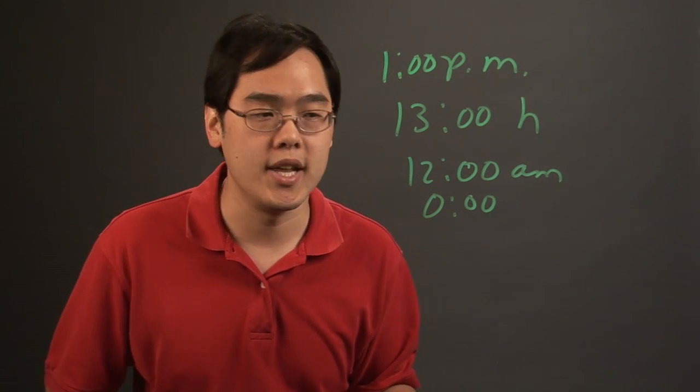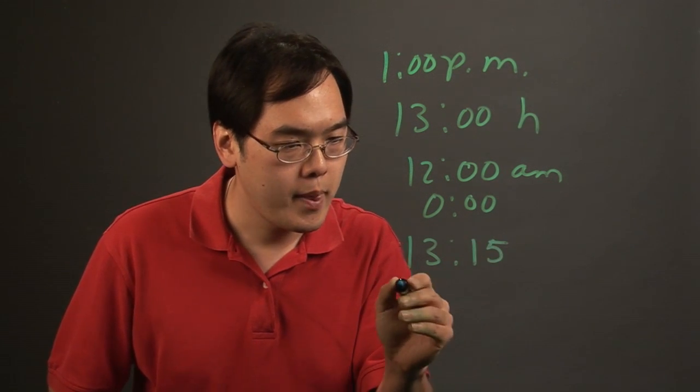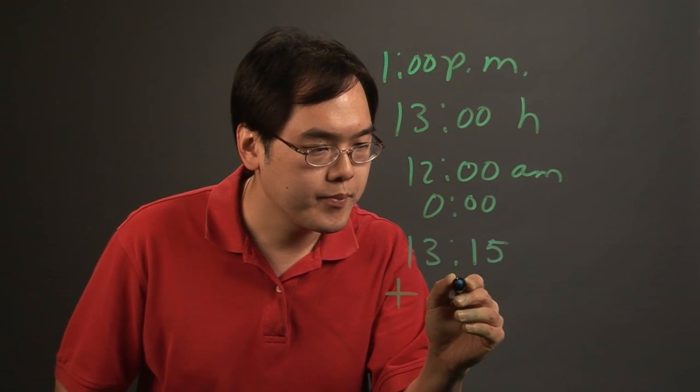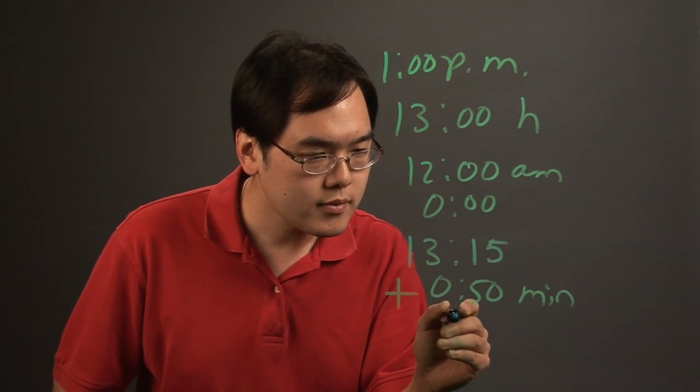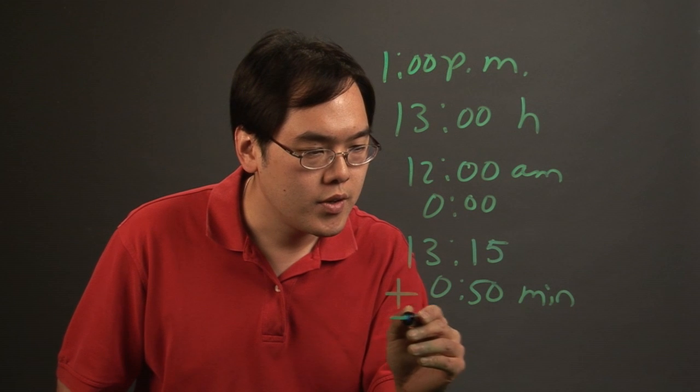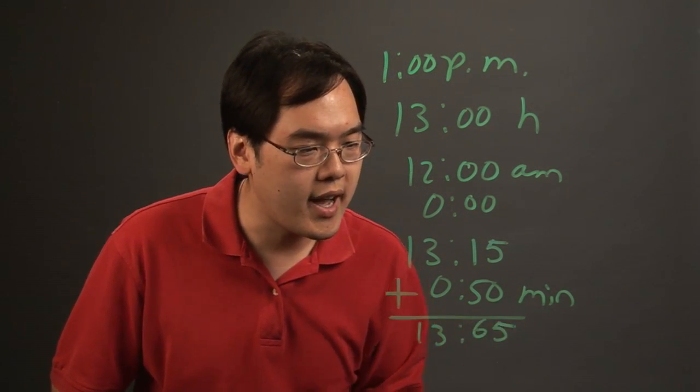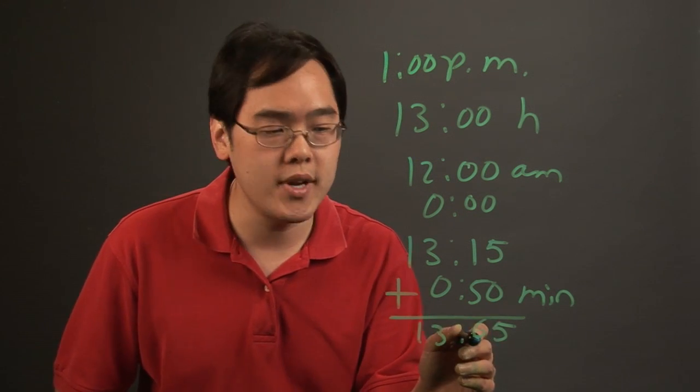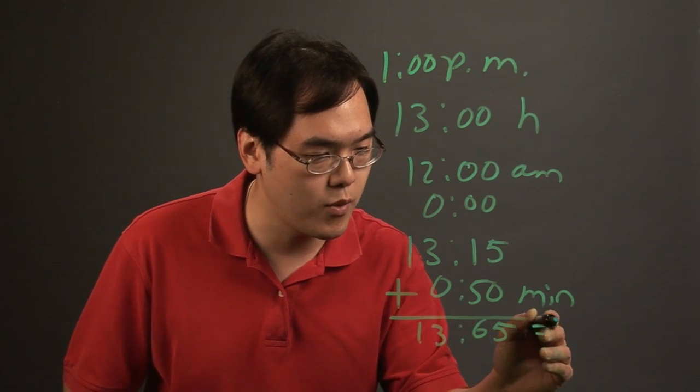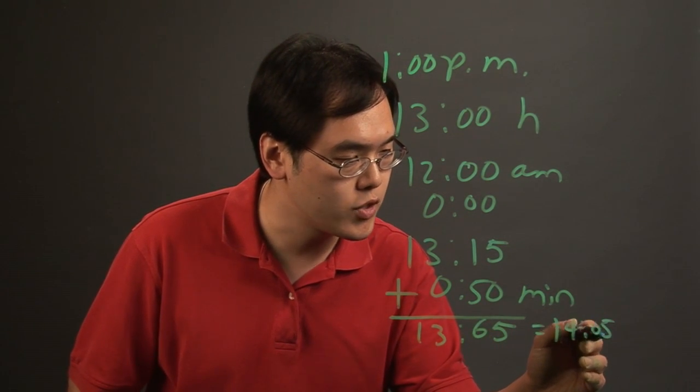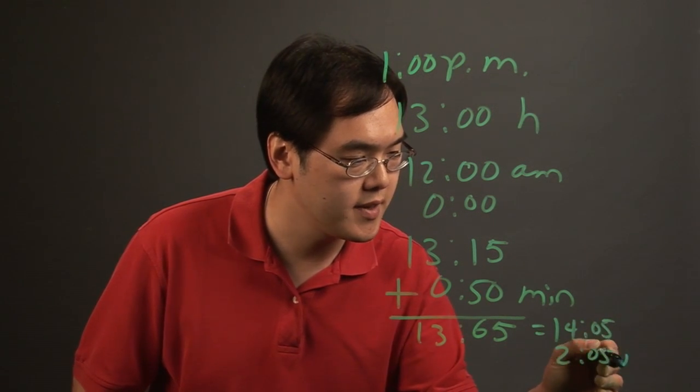So for example, if you have 13:15 and let's just say you're adding 50 minutes, the idea here is you have 13:65. But what you want to consider, though, is since you have more than 60 minutes here, you want to convert this to standard clock time. So this would be 14:05, which corresponds to—this is military time—but this corresponds to 2:05 p.m. in regular denoted time.